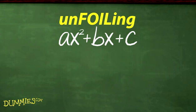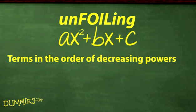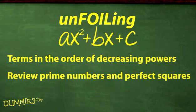The key to un-foiling these factoring problems is organization. Be sure you have an expression in the form ax² + bx + c. Be sure the terms are written in the order of decreasing powers. If needed, review the list of prime numbers and perfect squares. And finally, follow the steps.